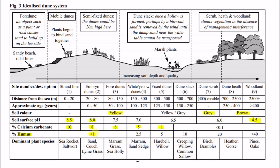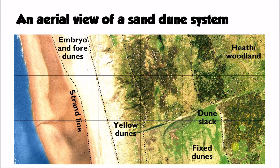Humus represents organic matter within the soil, and maybe less than one percent of the soil in an embryo dune might be organic matter. That links with species like marram grass or sea lime grass — pioneer species very well adapted to living with very few nutrients in the soil. Over time that percentage of organic matter increases to maybe 20 or even 40 percent, helping to support a much more diverse range of vegetation. We start to see the emergence of trees and shrubs as we move towards the back of the sand dune ecosystem.